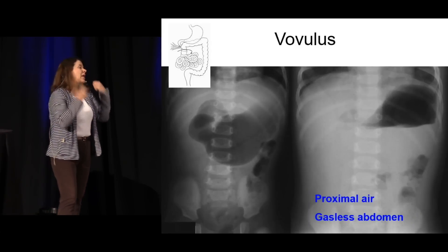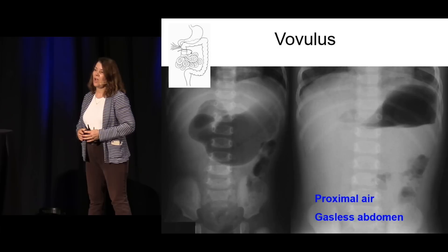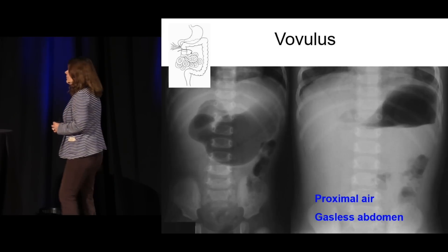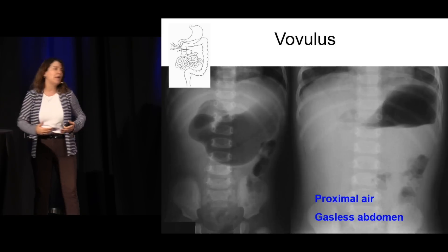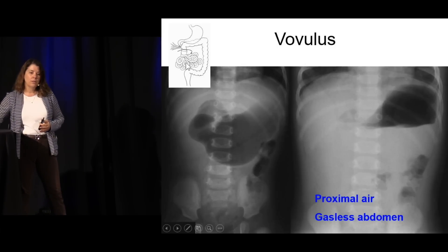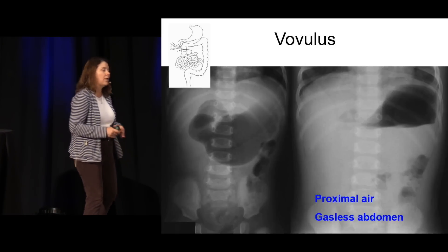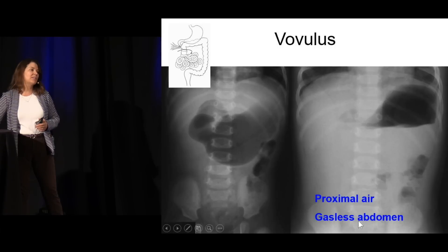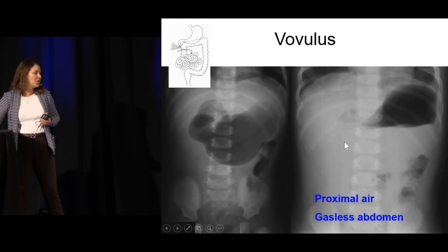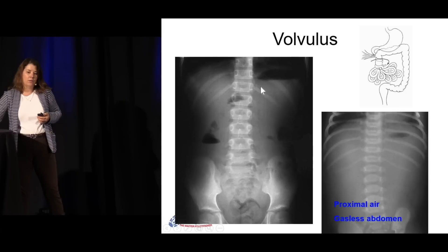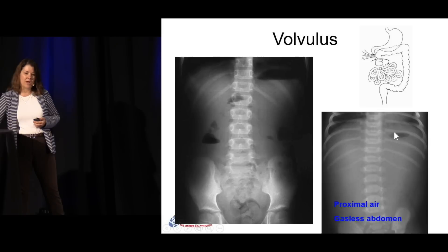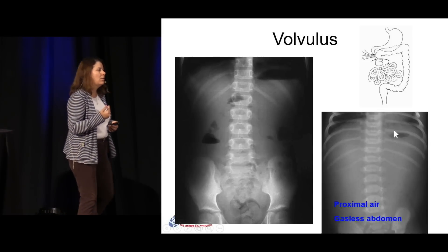A little bit on volvulus — this tends to be little babies born with malrotation. Their intestines are not tacked down well, and at some point it twists, generally in the first few weeks of life. Everything proximal to the twist is obstructed and they fill up with air — a lot of proximal air. Everything behind the twist, air passes out their rectum, so they lose air distally. What they get is proximal air and a gasless abdomen — sometimes called the double bubble sign — air in the proximal stomach and maybe a little air in the duodenum, then a gasless abdomen. Pretty classic for volvulus.